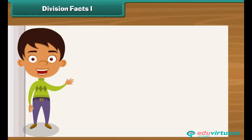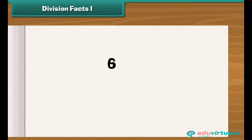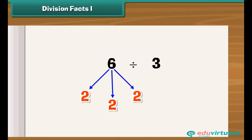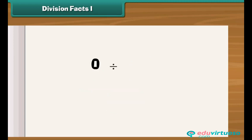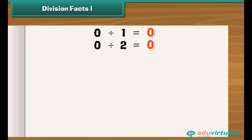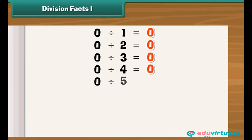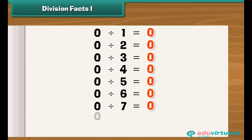Division is splitting a number into several equal groups. For example, when we divide six by three, we split six into three equal groups of two each. Numbers cannot be divided by zero because it is impossible to split a number into zero groups. Zero divided by any number is zero because when zero is split into groups, the result is also zero.